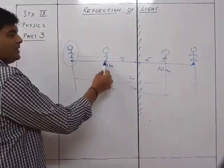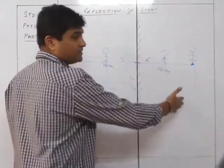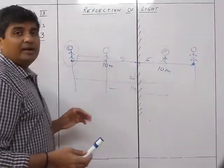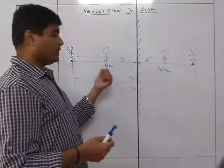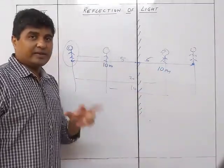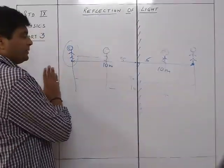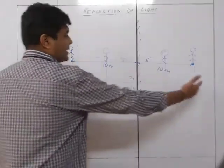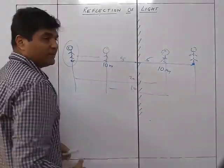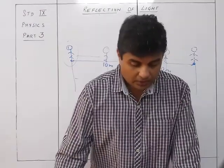So the change in object-to-image distance is twice the change in object position. If the object moves 5 meters closer, the object-to-image distance changes by 10 meters. Similarly, if the object moves at a certain speed, the rate at which the object and image approach each other is double that speed.